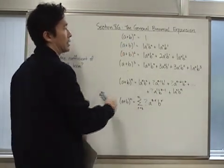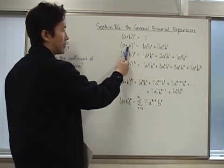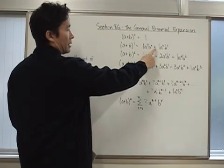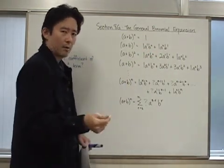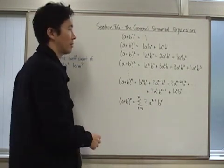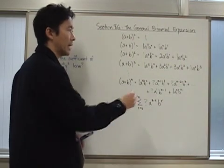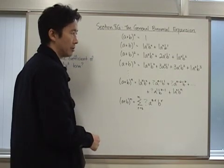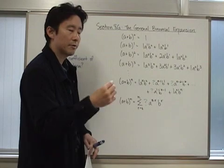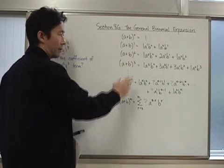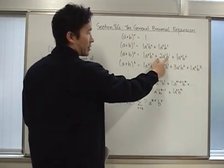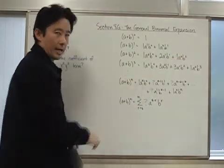Notice that if we take a plus b raised to the zero, it's just 1. And if we take a plus b raised to the first power, what we come up with is 1a to the first b to the zero plus 1a to the zero b to the first. Now, why am I writing all of this? The reason is because we want to find a pattern, and in order to find a pattern, it's going to be important for us to include all those bits of information that normally we wouldn't include. Even for a plus b raised to the second power: 1a squared b to the zero plus 2a to the first b to the first plus 1a to the zero b to the second, and so forth.